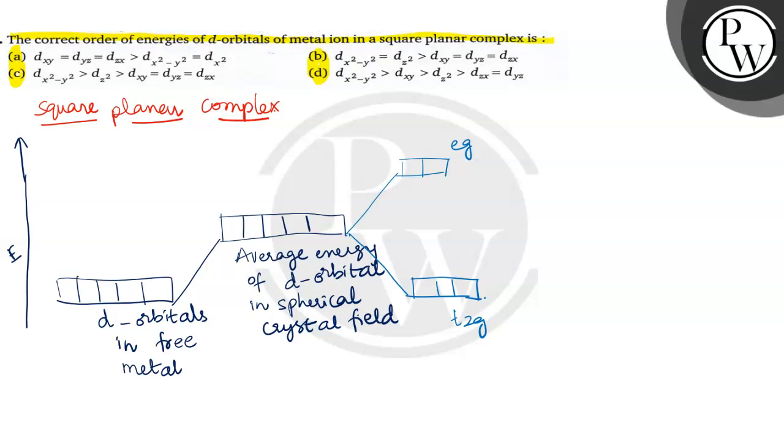But because of square planar complexes, as x and y planes and that orbitals are involved in the bonding, so there is a high energy difference you will observe. You will observe in case of dx² - y² and dxy orbitals. Whereas other orbitals, say for example...